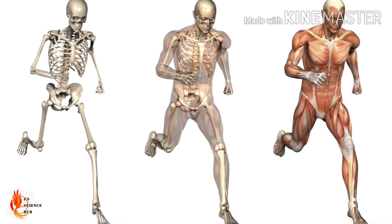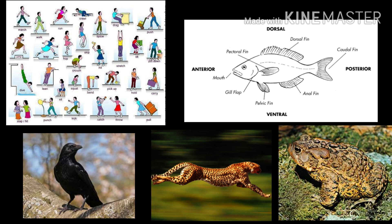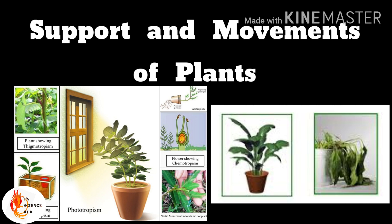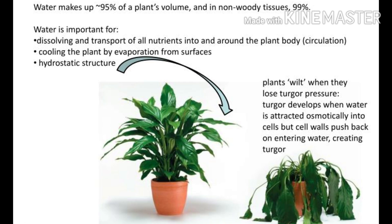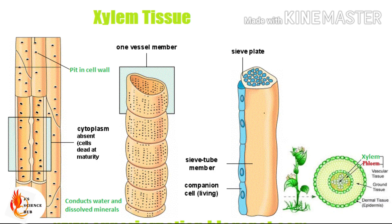Now we understand how vertebrate animals use their skeleton as well as their muscles for moving their body parts. Let's study about support and movements of plants. There are two different varieties of plants: woody plants and non-woody plants. On a sunny day, non-woody plants get withered and the stem bends down. This is due to the lack of water supply to the plant.